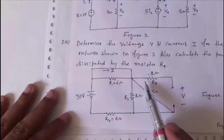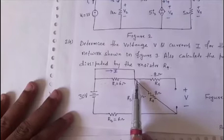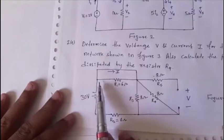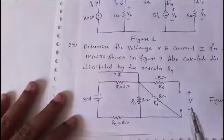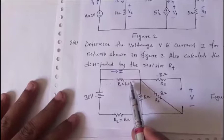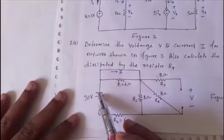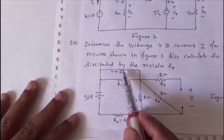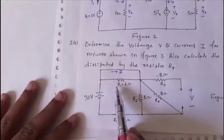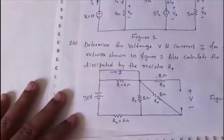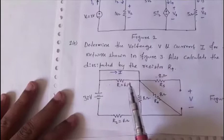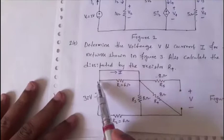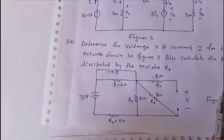r1 is a short circuit. Current always takes the path of least resistance, so no current flows through r1 even though it is connected. The parallel combination of the short circuit branch and r1 has zero resistance (0 × 6) / (0 + 6) = 0, effectively removing r1 from the circuit.